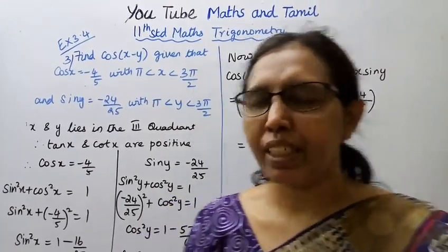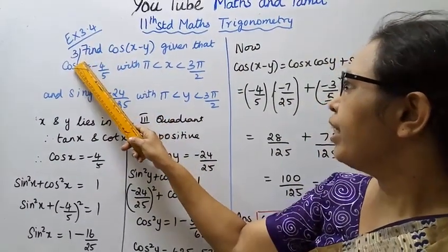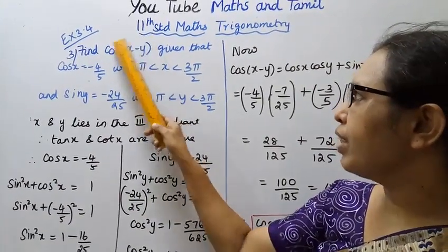Hello students, welcome to Maths and Tamil channel. This is 11th standard Maths trigonometry exercise 3.4, third sum. Find cos(x - y) using the formula cos(x - y) equals cos x cos y plus sin x sin y.